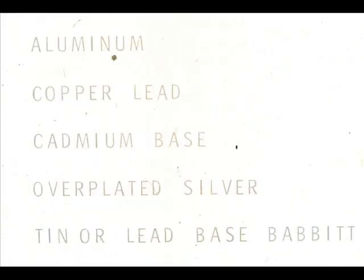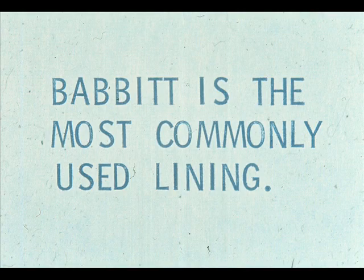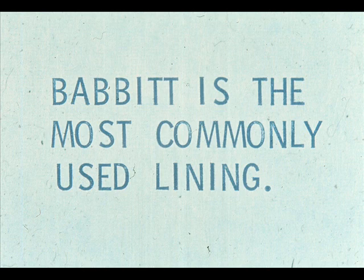The lining or coating used in sleeve bearings may be made of any of a variety of materials, such as aluminum, copper-lead, cadmium-base, over-plated silver, and Babbitt. Of all the different metals, a tin or lead-based Babbitt is the most commonly used. Babbitt is an alloy made of several metals, which is applied as a thin coating over the shell. In larger sleeve bearings for heavy-duty equipment, a thicker layer of Babbitt is used to line a rigid backing of steel, bronze, or cast iron.